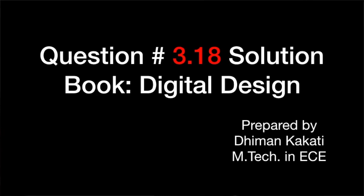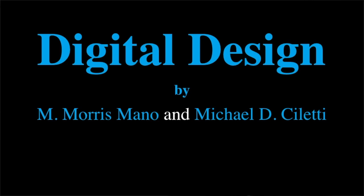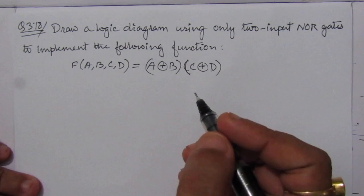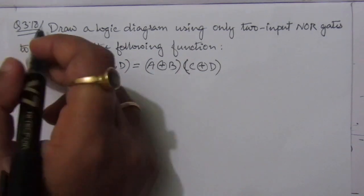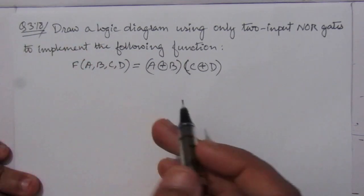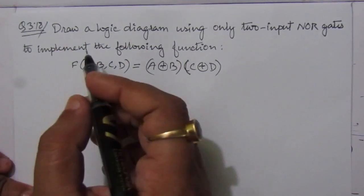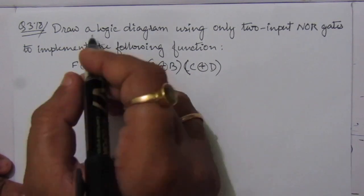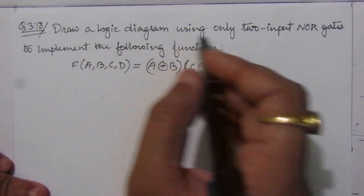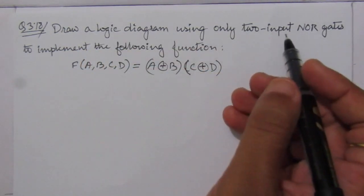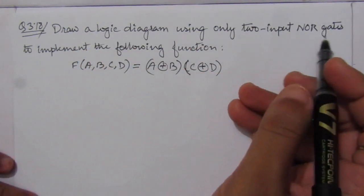Dear students, I welcome you all to this problem solution series in digital electronics. I am solving problems from the book 'Digital Design' by Morris Mano and Michael Ciletti. In this video I am solving problem number 3.18 from chapter three. The problem is: draw a logic diagram using only two-input NOR gates to implement the following function.